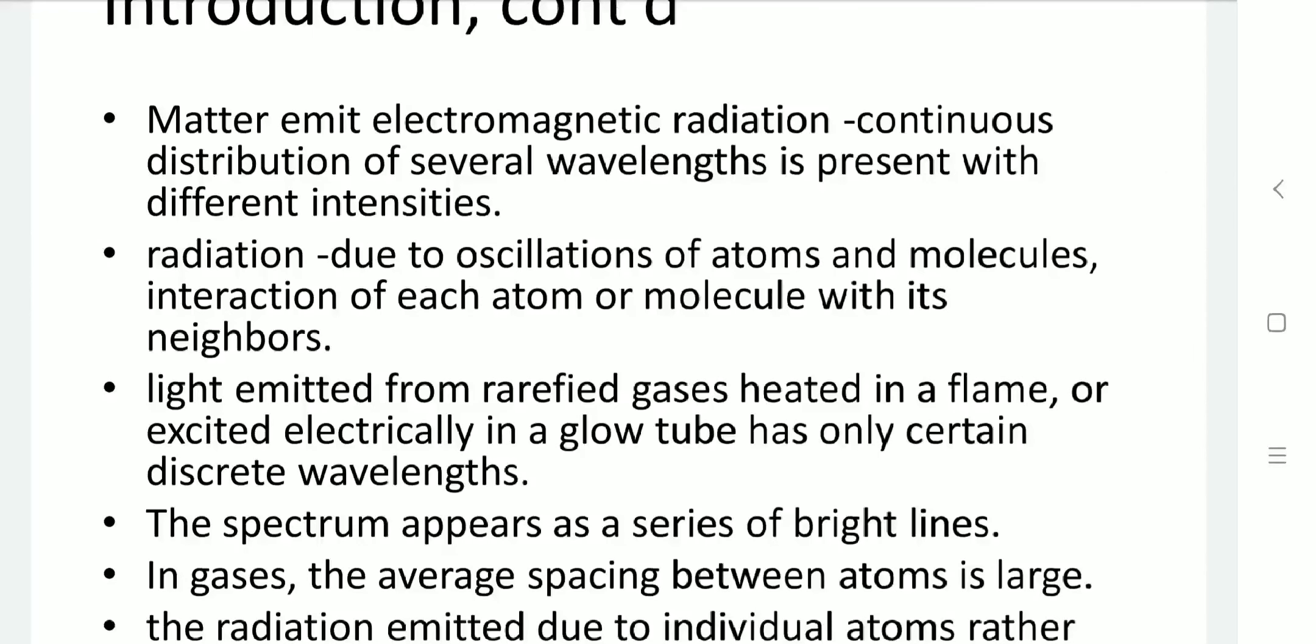As we already studied in chapter number 8, electromagnetic waves are radiated throughout space by electric and magnetic fields. This radiation takes place by the oscillations of molecules and atoms because of charge carriers. Interaction of atoms or molecules with their neighbor atoms is also present.